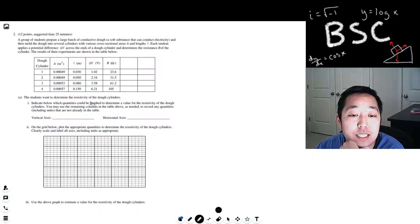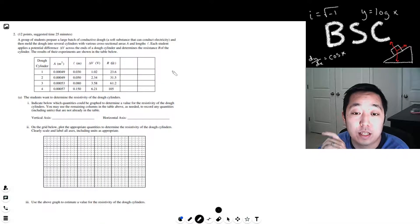The student wants to determine the resistivity of the cylinders. Indicate below which quantities could be graphed to determine the value for the resistivity of the dough and cylinders. You may use the remaining columns in the table to record any quantities that are not already in the table.